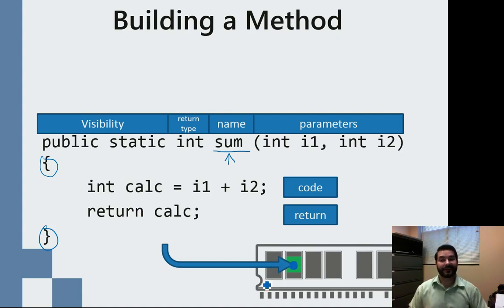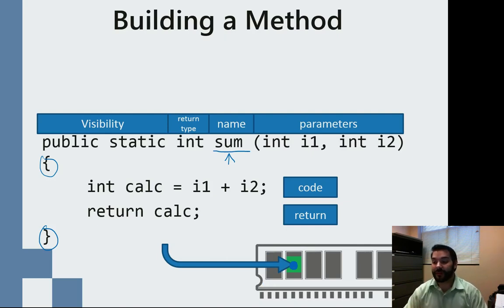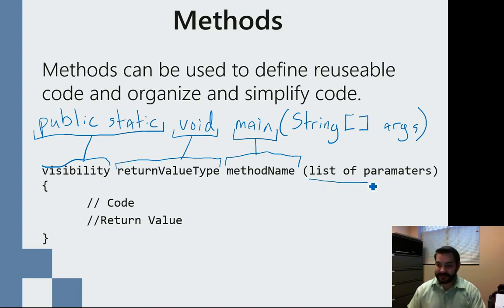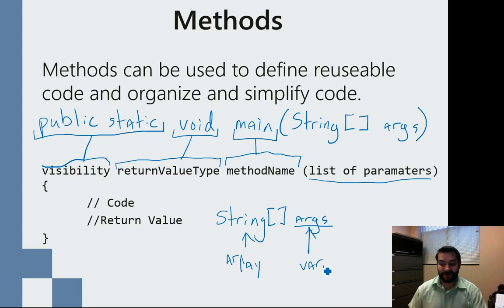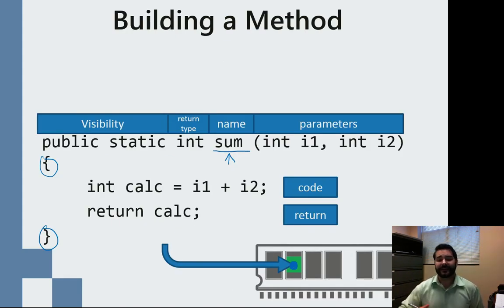So when we write the main method, it goes into memory. When we write, say for example, a method called sum, it goes into memory. Now one thing you'll also notice is in this description I say a list of parameters. For the main method, one of those is String[] args. Later on in the semester we're going to look at what the bracket means, but that is just an array — it's just a data type. And all this "args" word is, is just the variable that we're going to call it.